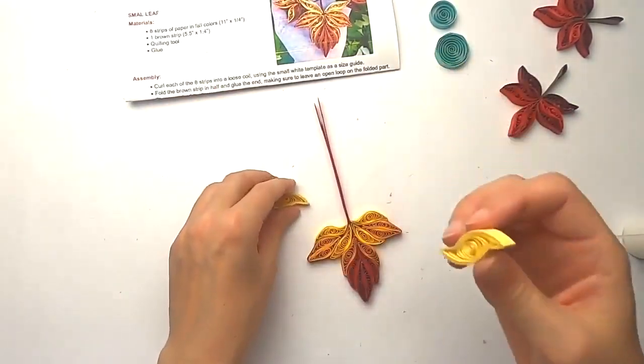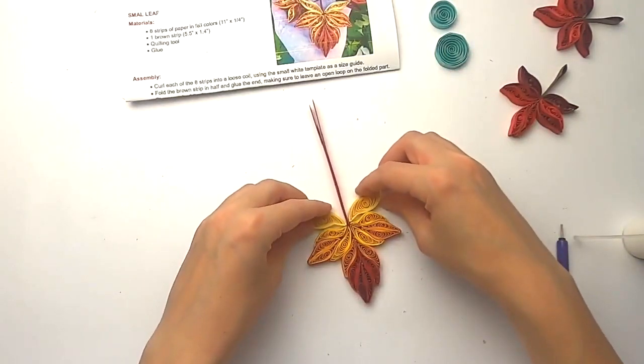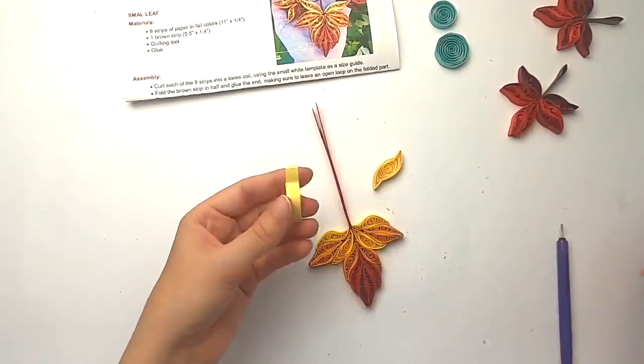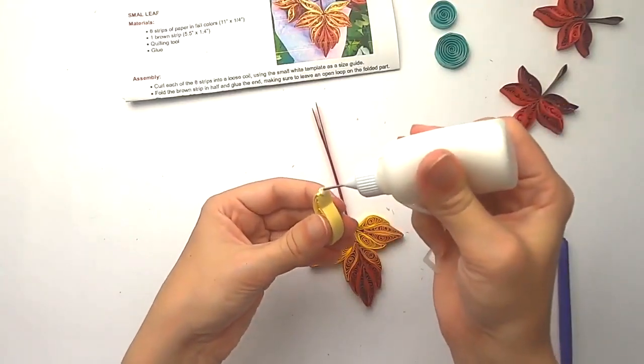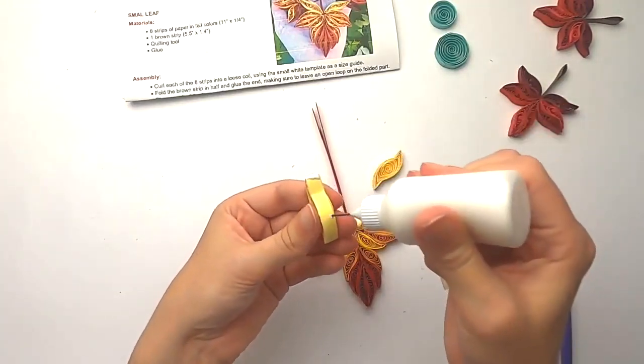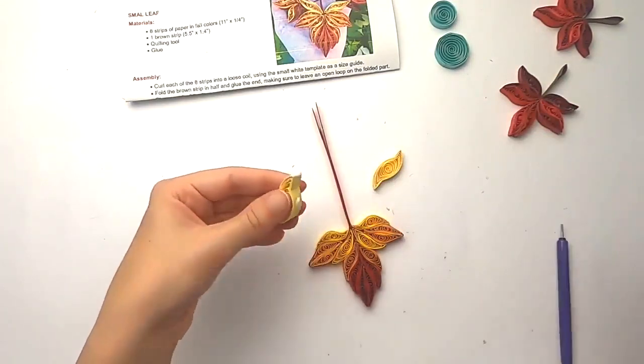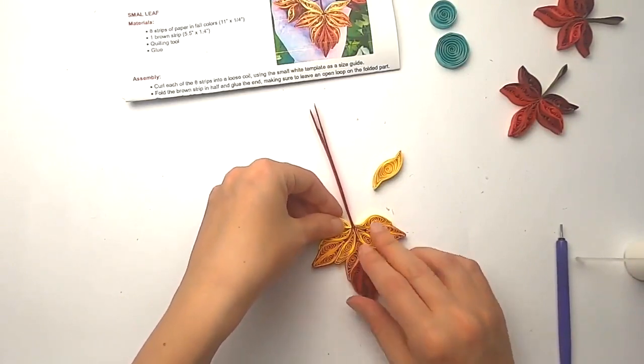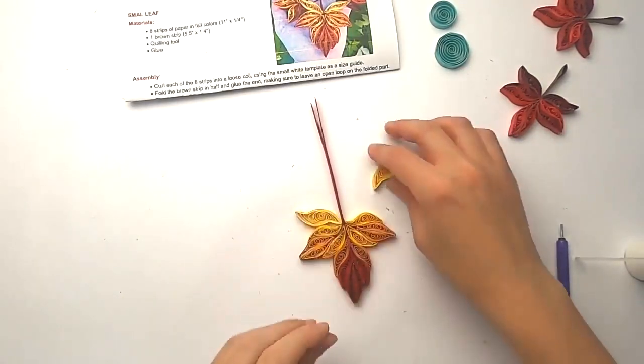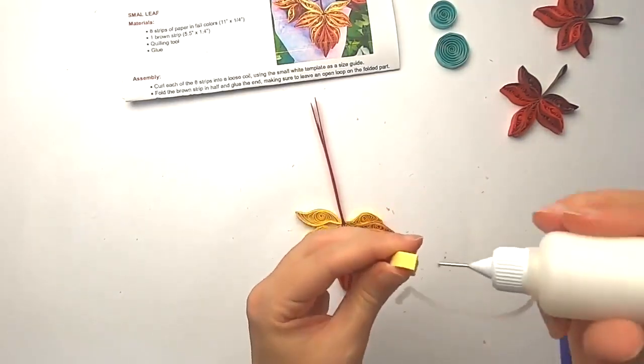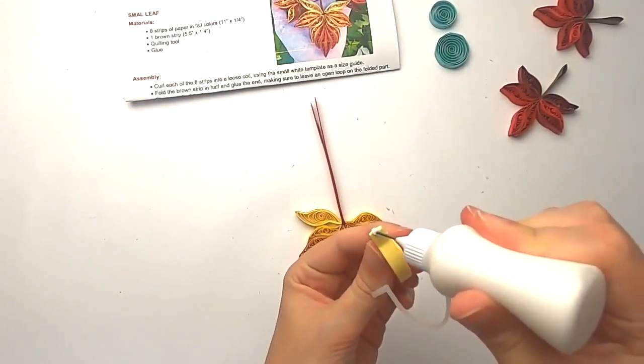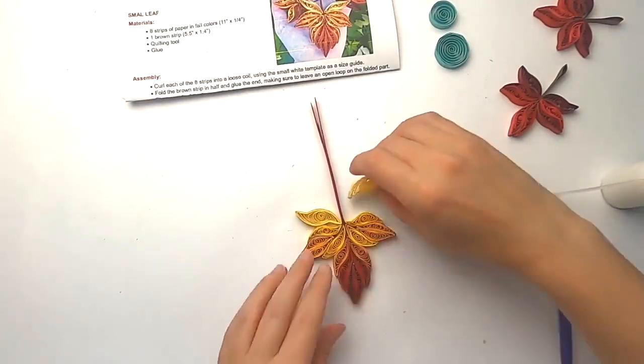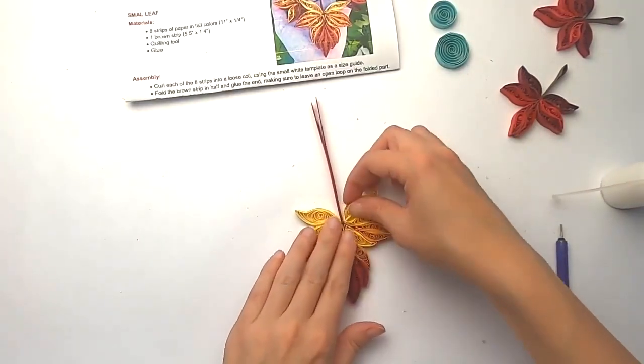The last part of it are going to be these guys that are going to be just like those coming in there. So we're going to put some glue on the edge there and on this little bump so they glue where they should. Here we are. Same on this side. And there we are.